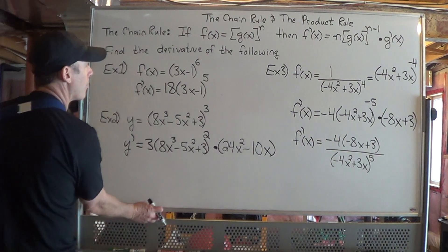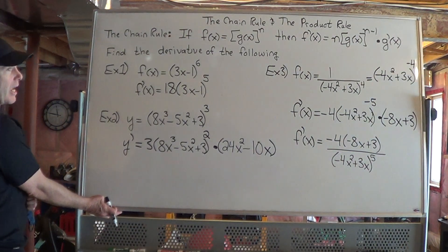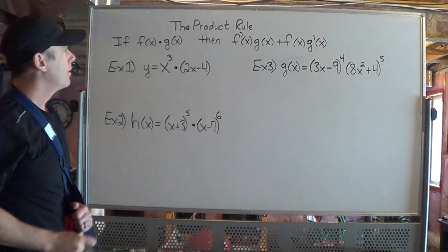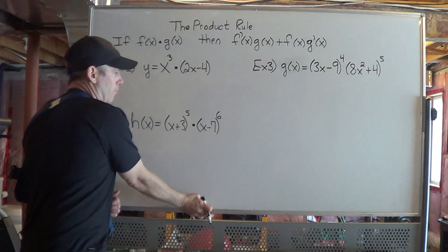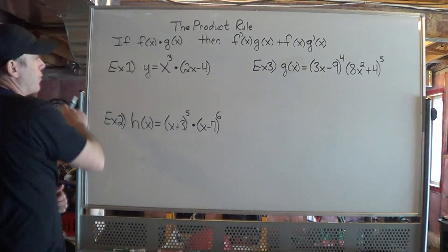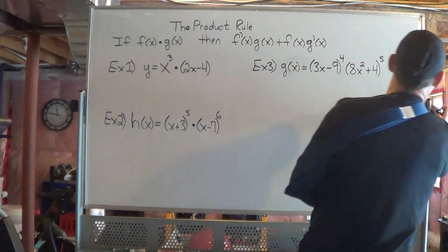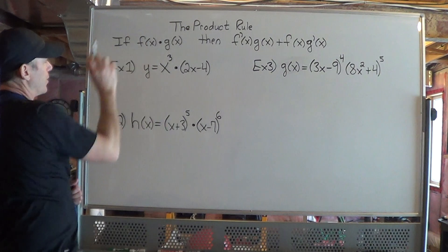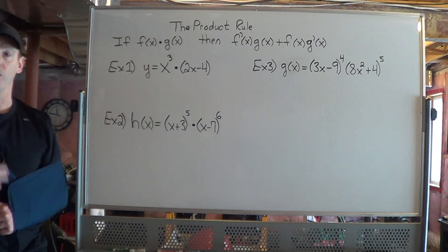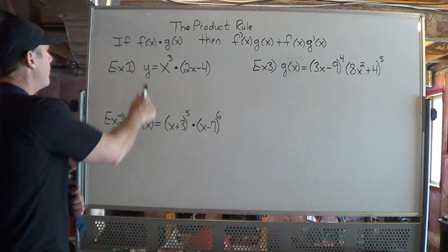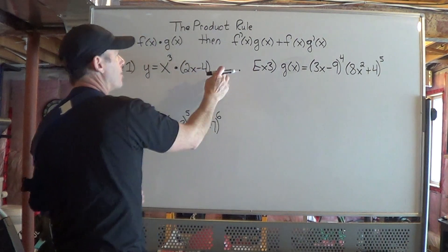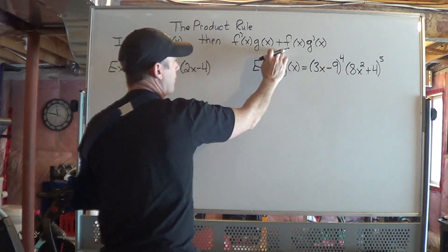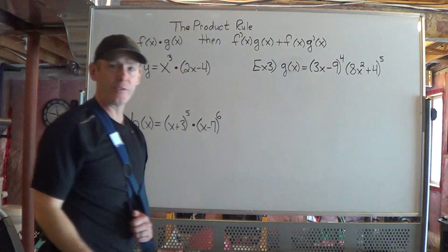The next rule is the product rule. A product is when you're taking two things and multiplying. With derivatives, you can use rules within rules. So if we have two functions f of x and g of x multiplying each other, then the derivative is the derivative of the first function times the second function, plus the first function times the derivative of the second function.